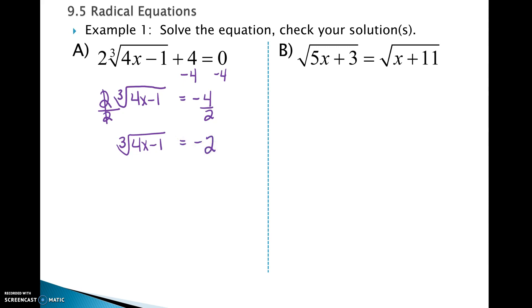So we have the third root of 4x minus 1 equals negative 2. Once you have isolated the radical, you need to undo the radical. You need to use the inverse of a cube root function. So this is a cube root, this is an index of 3. We are going to raise both sides to the power of 3. So we have 4x minus 1. That cube root and the cube cancel each other out.